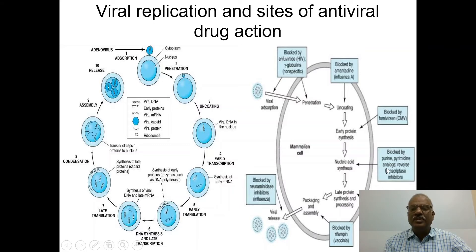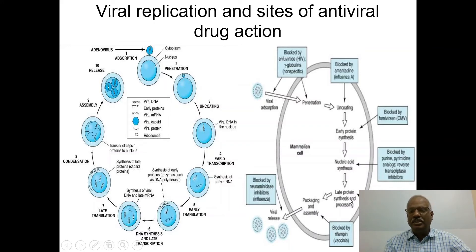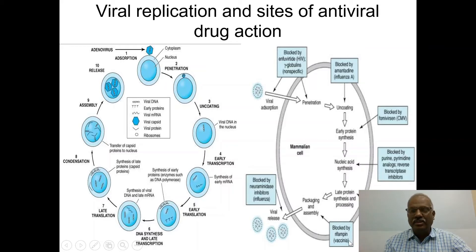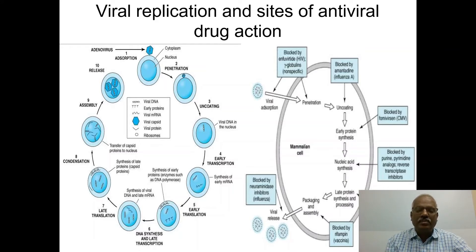Nucleic acid synthesis is inhibited by purine and pyrimidine analogs and reverse transcriptase inhibitors. Late protein synthesis and processing can be inhibited by brivudine in the case of varicella zoster, and by protease inhibitors. Packaging and assembly of newly formed virus particles is blocked by rifamycins in the case of vaccinia virus. Budding or release of viral particles can be inhibited by neuraminidase inhibitors in the case of influenza virus.